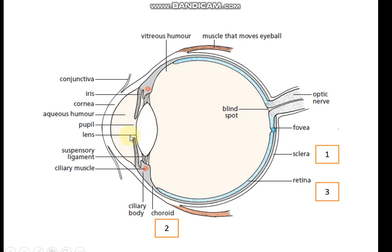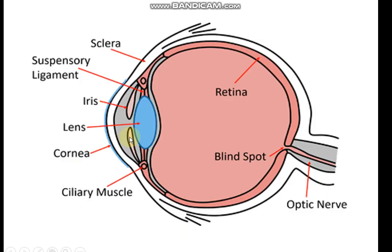Let's have a quick recap and finish this topic. Here is another diagram showing different parts: the outermost layer is the sclera, then we have the choroid, the dark middle layer, then the third layer is the retina on which the image is formed. The fovea is where the maximum rod and cone cells are present. The blind spot has no rod and cone cells. Optic nerves take nerve impulses to the visual center of the brain to interpret the image. Suspensory ligaments and ciliary muscles together control the shape of the lens so that focused images form on the retina.